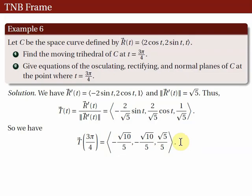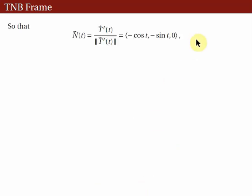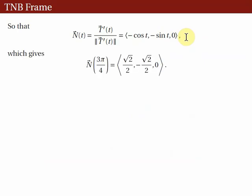Next, let's determine N(t), the unit normal vector. The unit normal is T'(t) over the norm of T'. Taking T' by differentiating each component, we get the derivative of the first component, the derivative of the second component, and 0. The norm of T'(t) is 2/√5. So the unit normal vector N has its first and second components divided by the norm, and third component 0. At t = 3π/4, we evaluate to get N(3π/4).